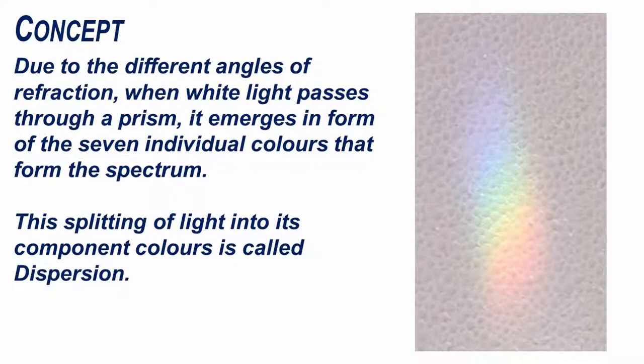Due to the differing angles of refraction, when white light passes through a prism, it emerges in form of the seven individual colors that form the spectrum.